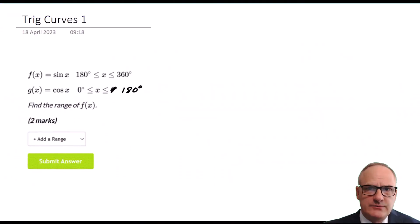In this series of how to get a 9 in IGCSE maths, we look at a couple of questions sent to me by a student. In this first question we have f(x) equals sin x, and it's defined between x is between 180 and 360.